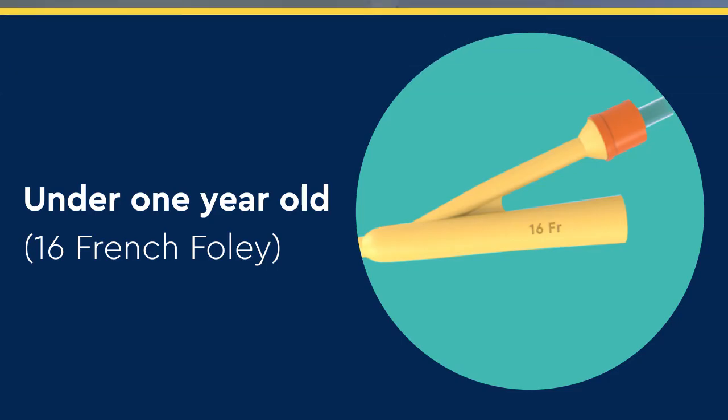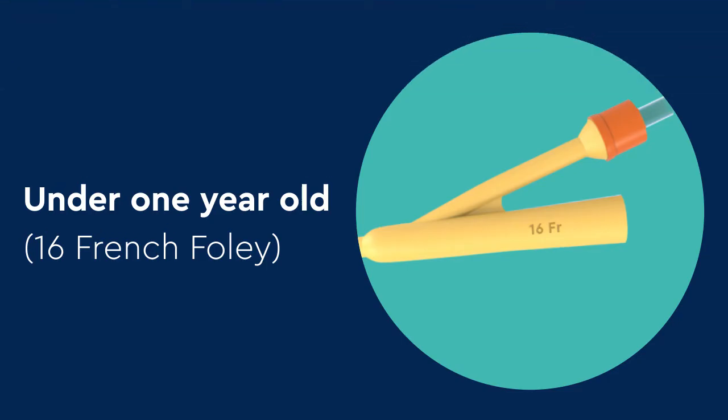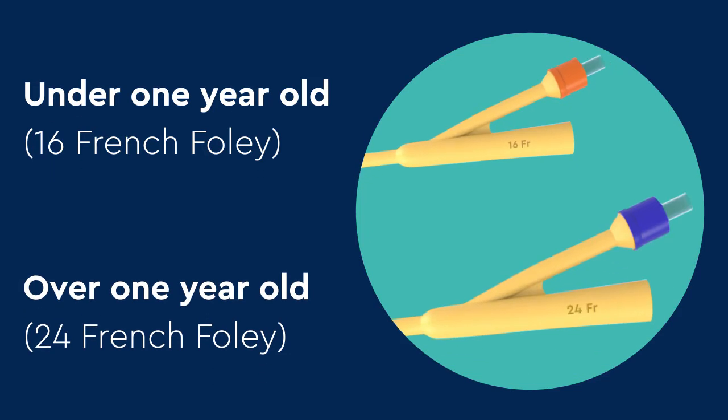If your child is under one year old, a size 16 French Foley catheter should be used. And if your child is over one year old, then you'll need to use a size 24 French Foley catheter.